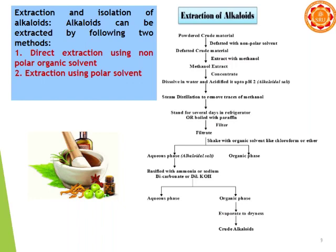The extraction and isolation of alkaloids can be done by two methods: direct extraction using a non-polar organic solvent, and extraction using a polar solvent. For extraction, we start with crude plant material, defat with a non-polar solvent, then extract with methanol. The methanolic extract is concentrated, dissolved in water, acidified to pH 2, and steam distillation is used to remove traces of methanol. The mixture is then stored in a refrigerator for several days or boiled with paraffin.